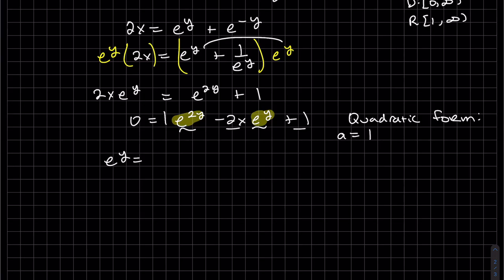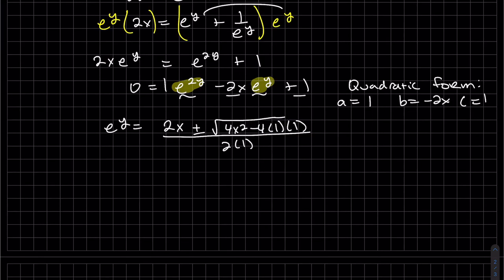Where a is 1, b is minus 2x, and c is 1. Minus b is positive 2x. Plus or minus the square root of b squared minus 4 times a times c. Again, just plugging these into the quadratic formula. All over 2 times a, which is 1. Simplify this.